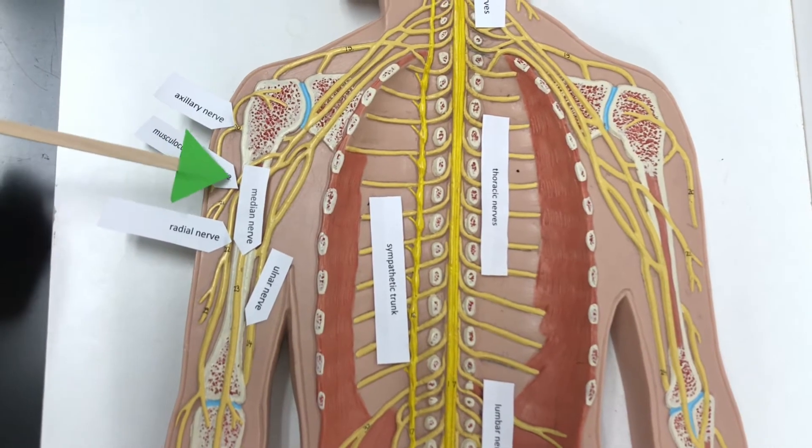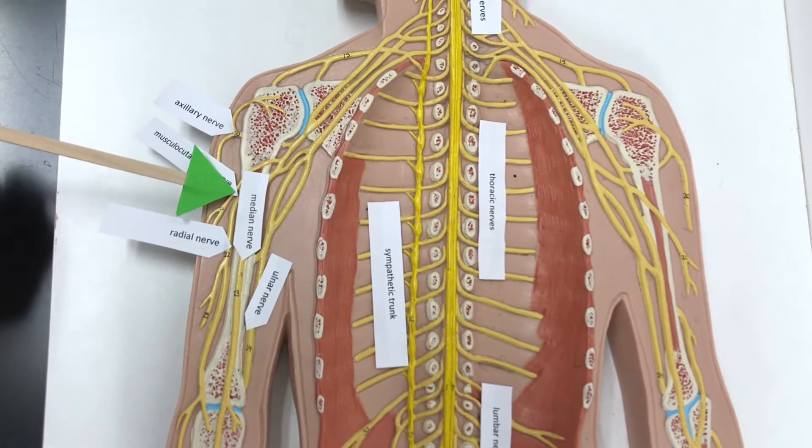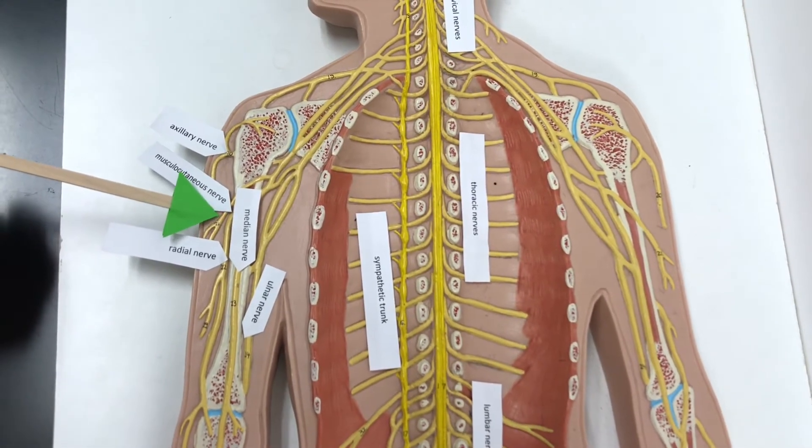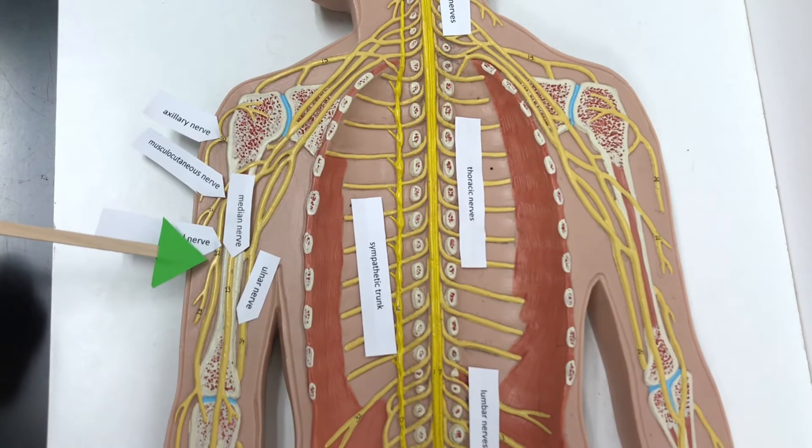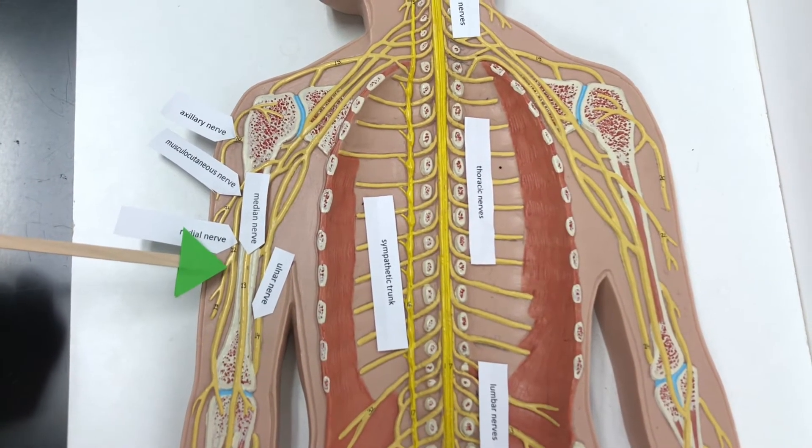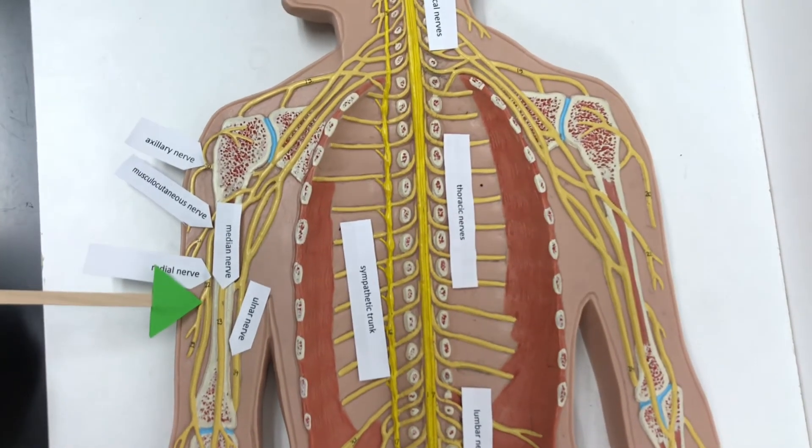We have the musculocutaneous nerve, which innervates the anterior arm muscles. We have the radial nerve, which innervates the extensor muscles of the forearm, wrist, and fingers.